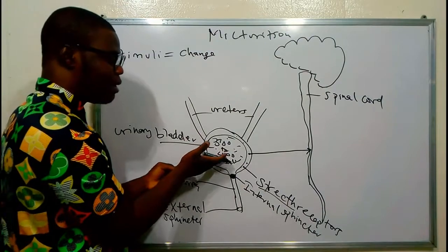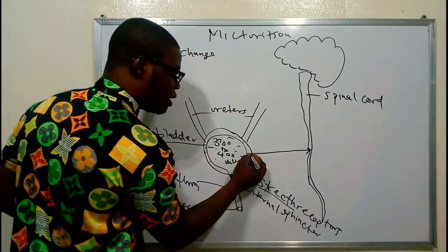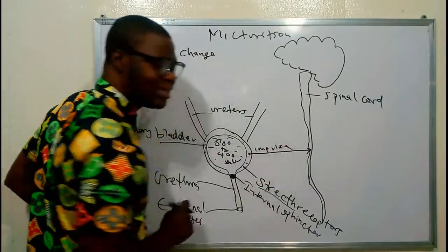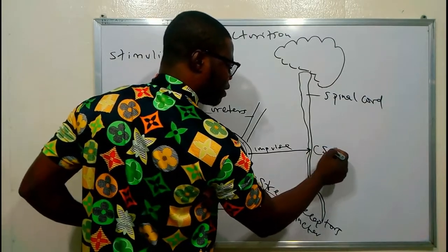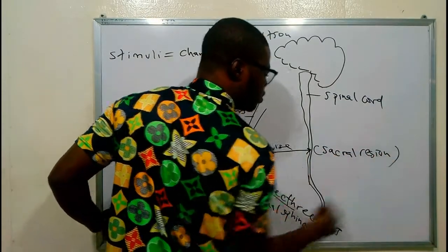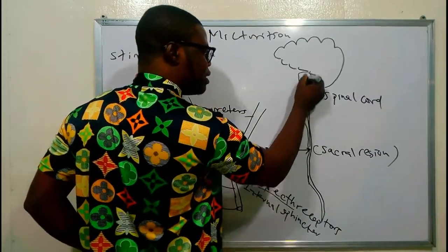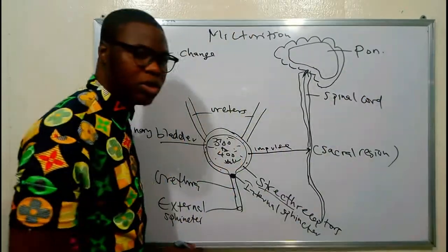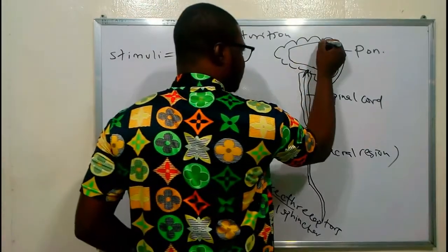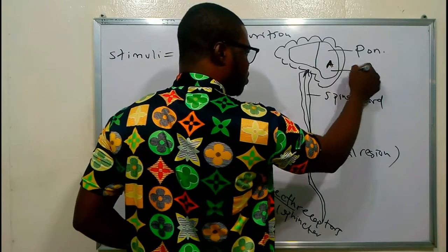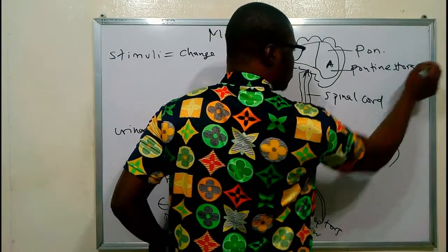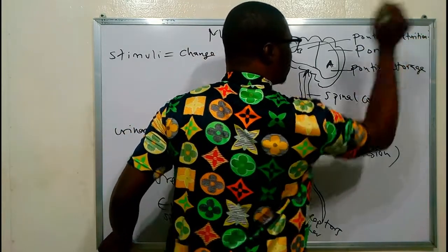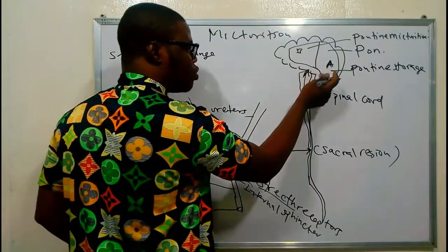When the urinary bladder is filled with urine of about 300 mL, the stretch receptors sense the stretch and send an impulse — a message — to the sacral region of the spinal cord. After that, in adults, the impulse ascends into the brain, specifically to a center called the pons. The pons has two parts: the pontine storage center and the pontine micturition center.